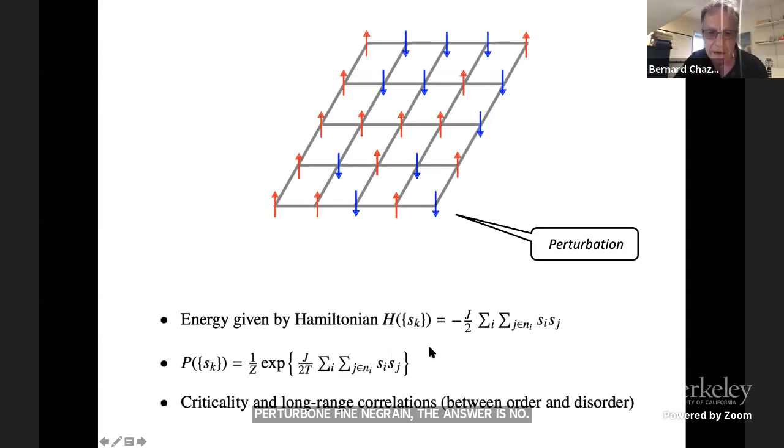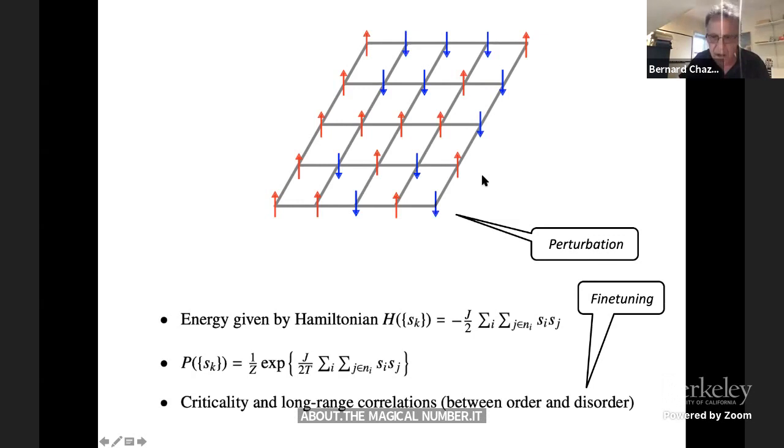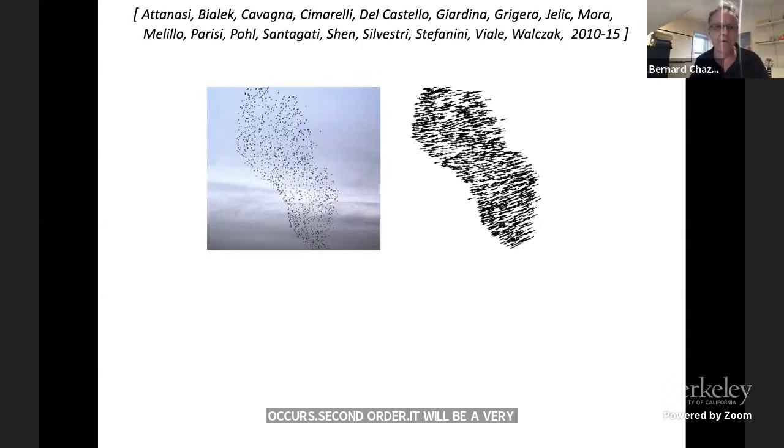However, there is a magical temperature called critical temperature where at that temperature, there is long range correlations. So you can actually use that to transmit information. And this is going to be the connection to flocking. The key thing is it's a magical number. It has to be fine tuned very carefully. If you just try random temperature it's never going to happen. So that's how phase transitions occur. Phase transition here would be second order. Now the birds, we're going to use the same idea to understand birds.